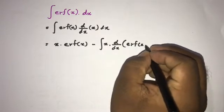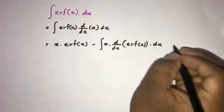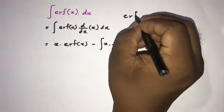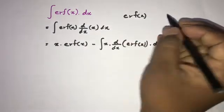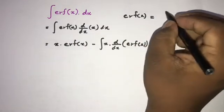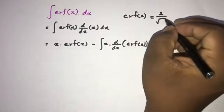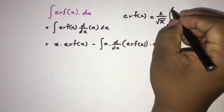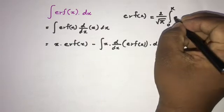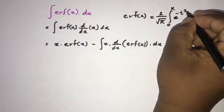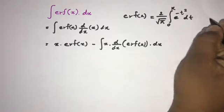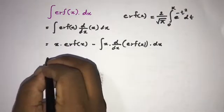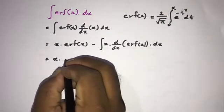We know that erf(x) is equal to 2 over square root of pi, times the integral from 0 to x of e to the minus t squared dt.